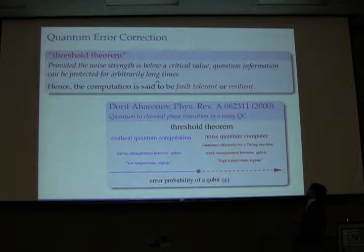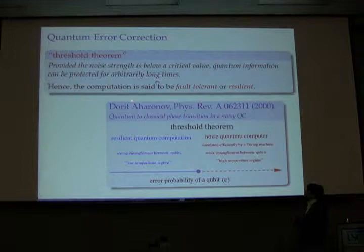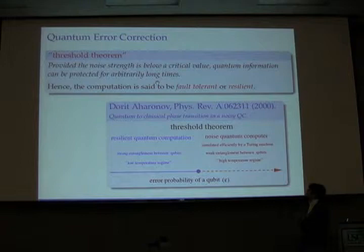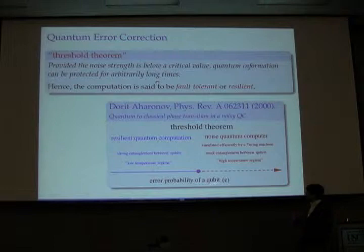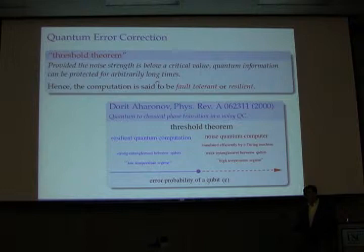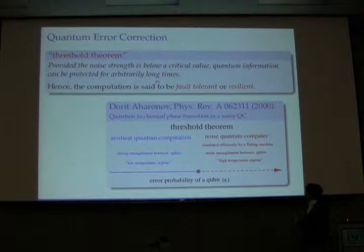An important result we learned yesterday is the threshold theorem: if you're below a certain noise strength, then you can protect your quantum computer for arbitrarily long times. In a 2000 paper, Dorit Aronov made a very nice analogy with the theory of quantum-to-classical phase transitions. If you are below the error probability threshold for a qubit, you are in a resilient, strong-entanglement, low-temperature regime where quantum computation is okay. If you are above a certain noise strength, the quantum computer is noisy and you lose the possibility of creating strong entanglement between your qubits — this is like the high-temperature regime.